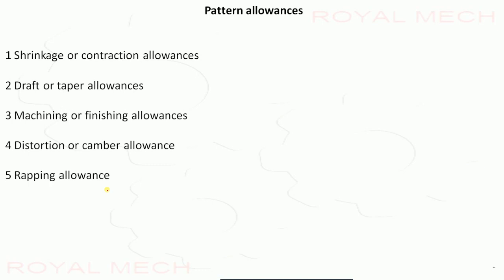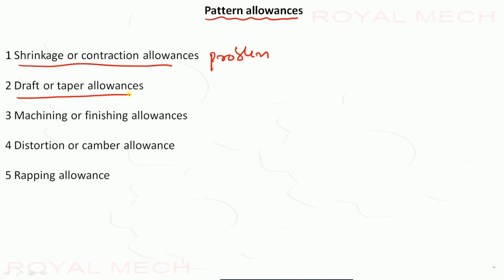In the next video, we are going to study pattern allowances: shrinkage or contraction allowance with some problems, draft or taper allowance, machining or finishing allowance, distortion or camber allowance, and rapping allowance with detailed explanation. Thank you for watching.